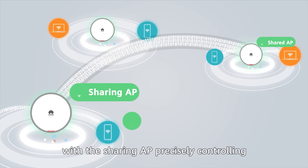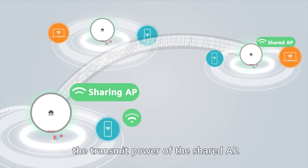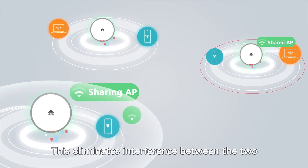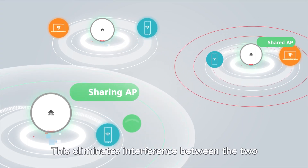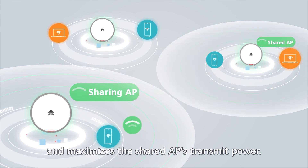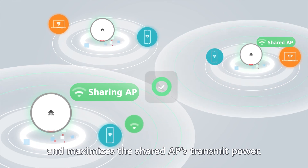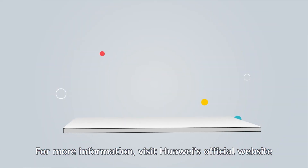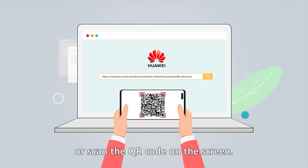The sharing AP precisely controls the transmit power of the shared AP, eliminating interference between the two and maximizing the shared AP's transmit power. For more information, visit Huawei's official website or scan the QR code on the screen.